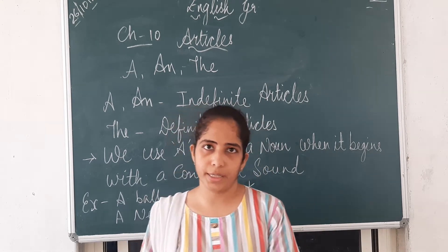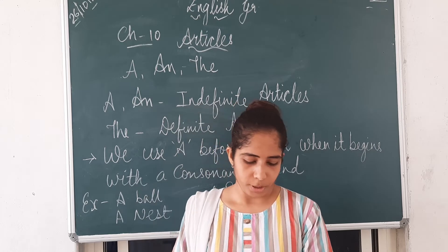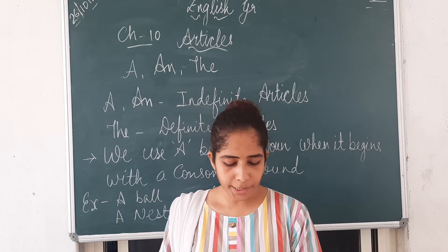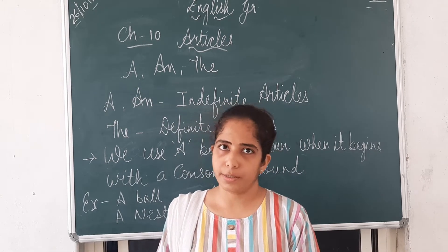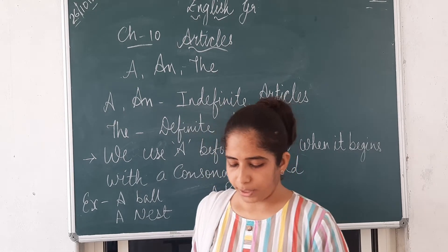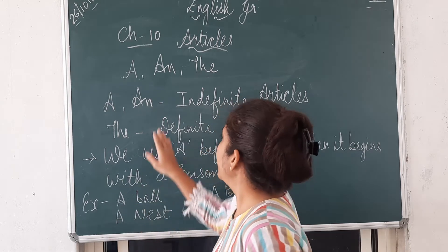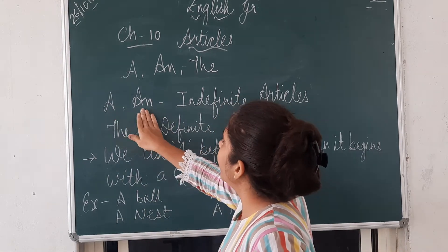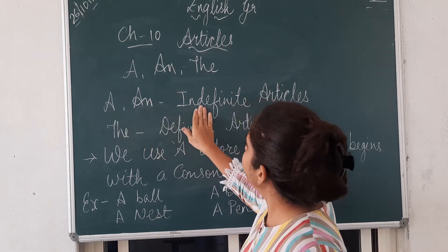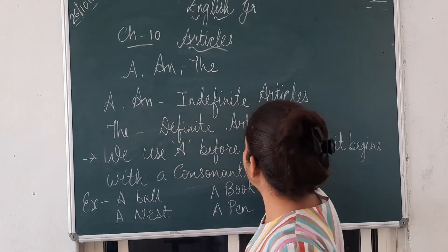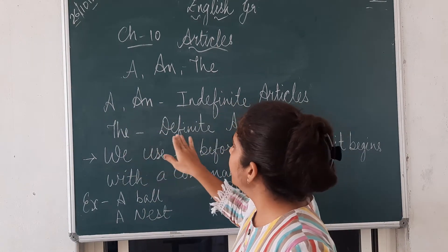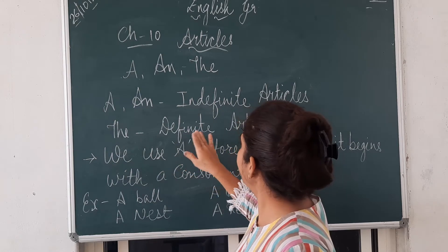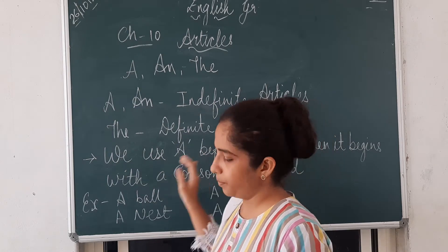Now let us start with the articles. A, an, and the are called articles. In that, A and AN are indefinite articles, and THE is the definite article.